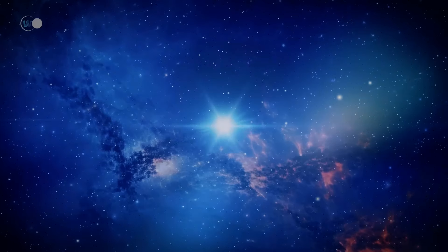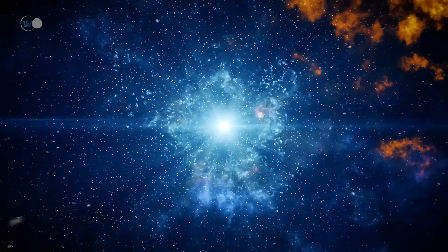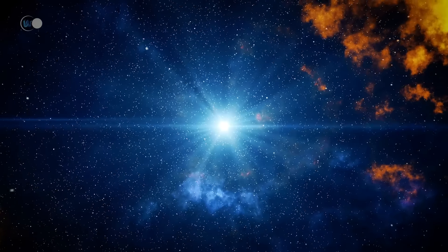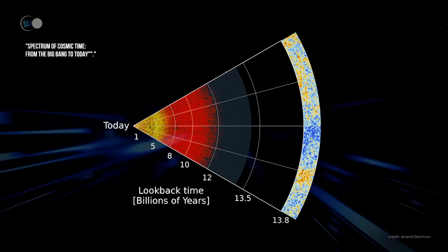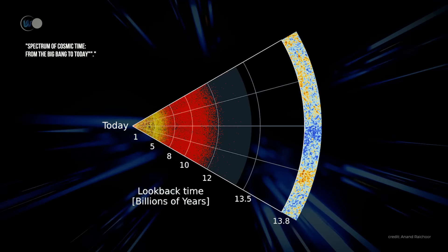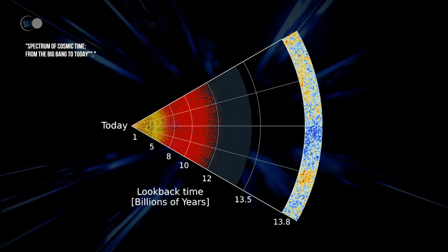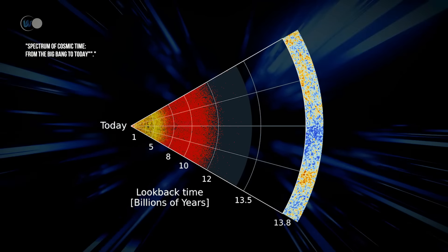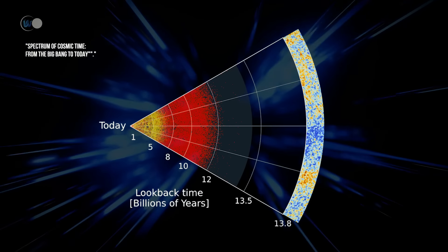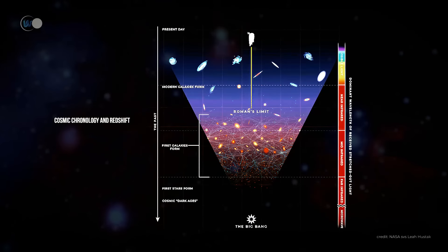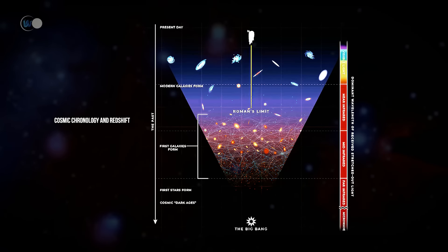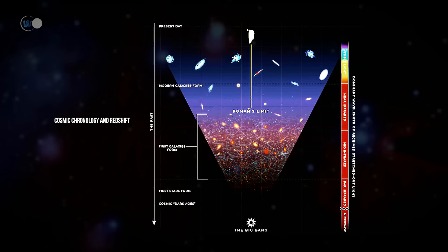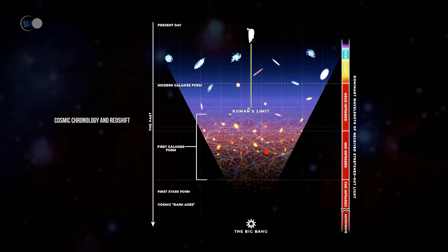The notion of look-back time is important here. Look-back time is an estimate of the time since which light from a distant astronomical object was emitted. This estimate is calculated as a function of the object's redshift — we estimate the object's age in cosmic time, then convert it into light years to determine the distance light has traveled from the object to Earth.